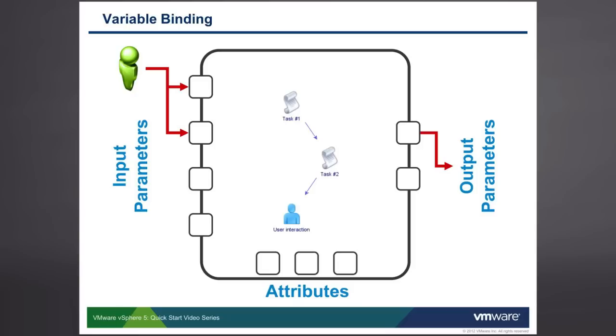Variable binding is a process by which we're able to take input parameters, output parameters, and or attributes, and make those variables visible to schema elements within our workflow. As you can see illustrated here in this particular slide, we have a very simple workflow that has three simple schema elements. The first two schema elements are scriptable tasks. The third one is a user interaction. We'll talk about what that is in a few moments.